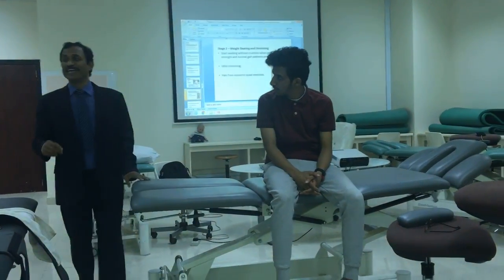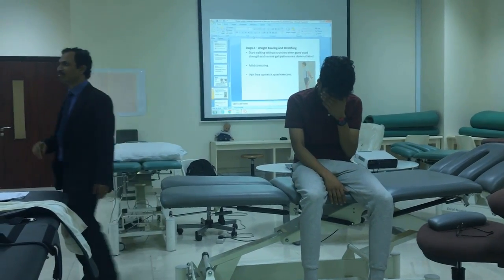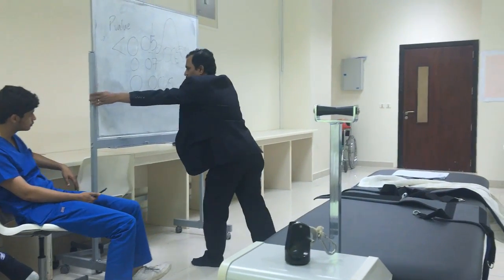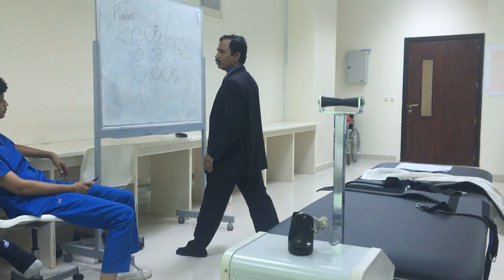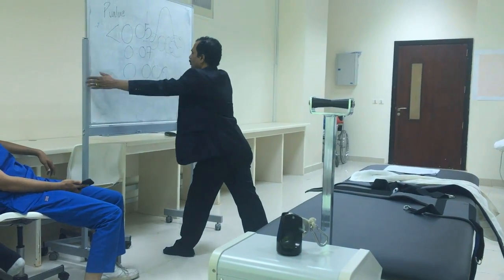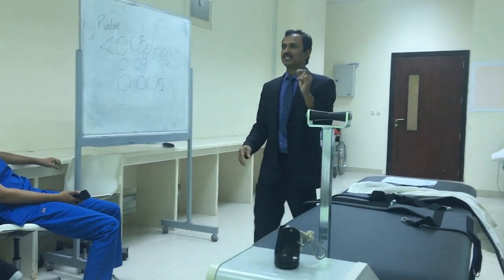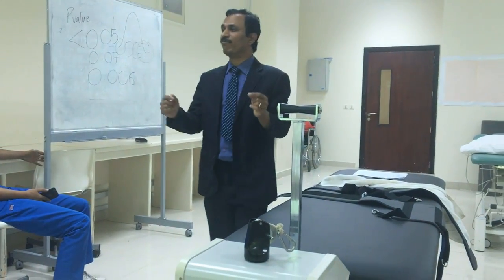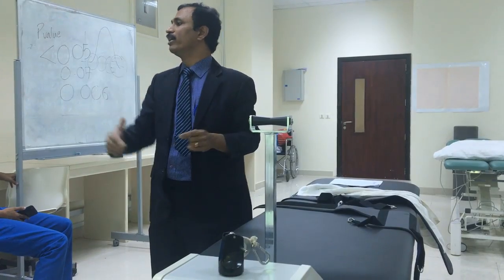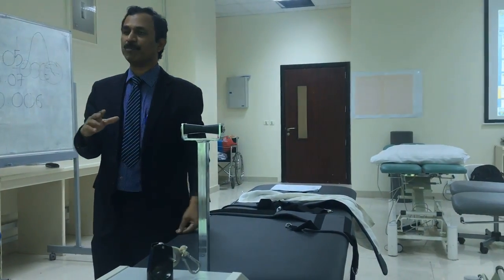Number four: you can do gastrocnemius stretching. For example, for a right side problem, do gastrocnemius stretching — keep the knee in extension, do not do knee flexion, then go forward. This is because the gastrocnemius originates from above the knee, so to increase knee range of motion you should also do gastrocnemius stretching.